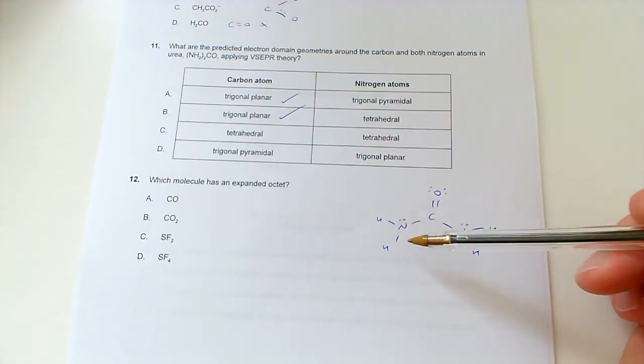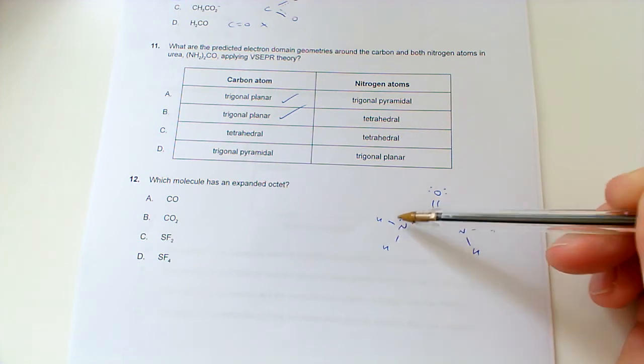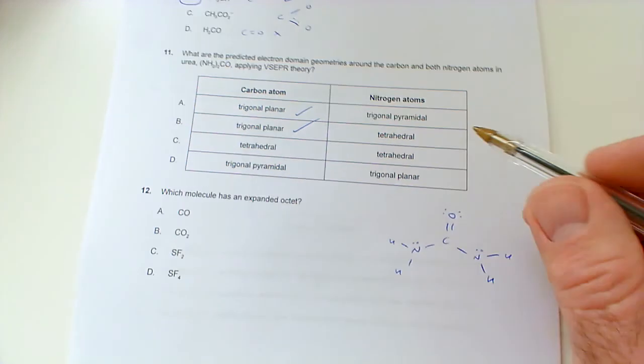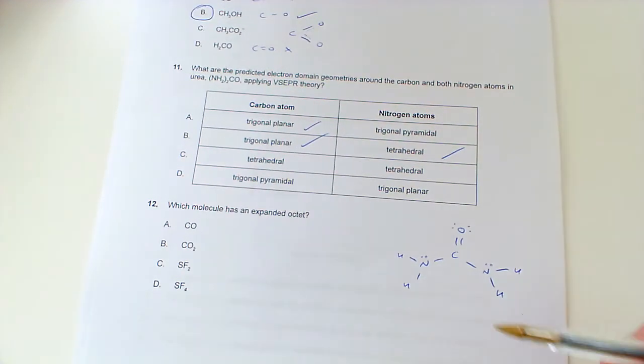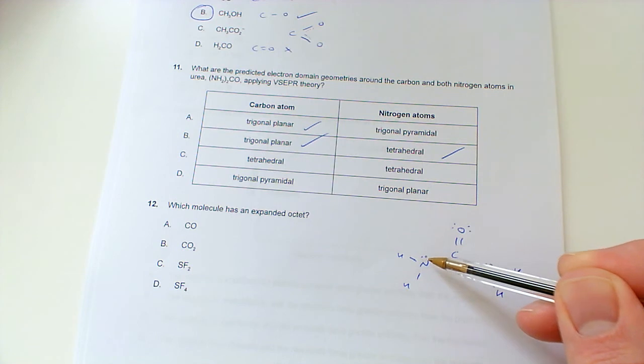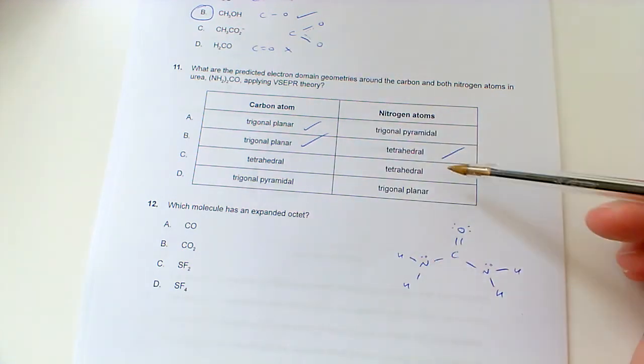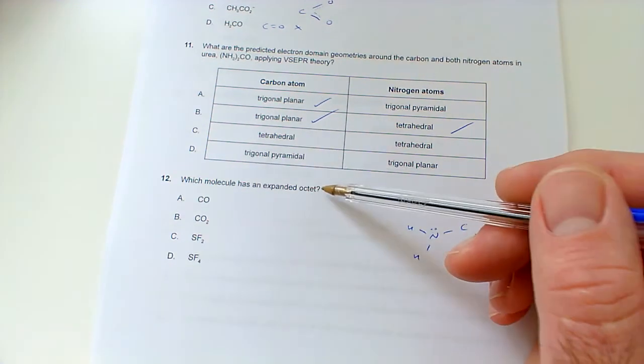The electron domain geometry around the nitrogen: we've got one, two, three bonding pairs plus we also have a lone pair, so the electron domain geometry will be tetrahedral because that's four electron domains. The molecular shape around it would be trigonal pyramidal because we don't see the lone pairs. However, it's asking for the electron domain geometry, so with four electron domains it would be tetrahedral.